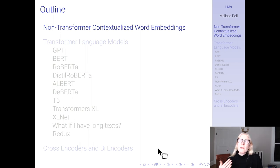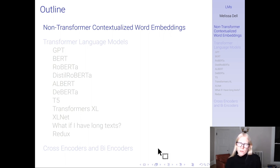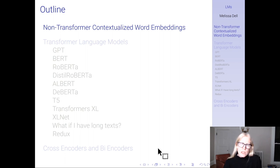We talked a bit about how when we got to the transformer, we were going to see contextualized word embeddings, where the representation for a word differs depending on the context in which it was used. But of course, you don't have to have a transformer model to have contextualized embeddings — this idea actually slightly predates the transformer.